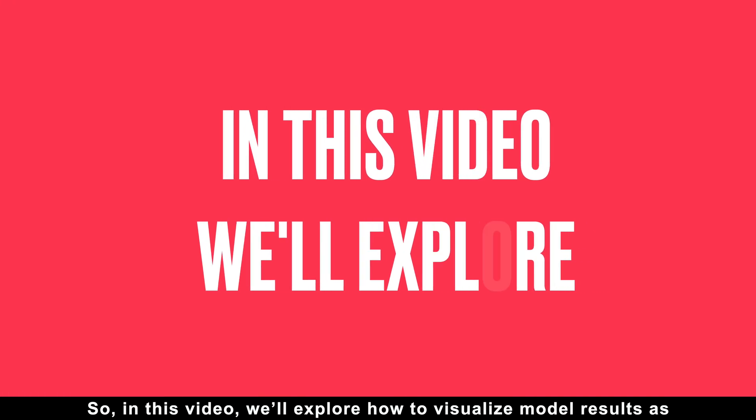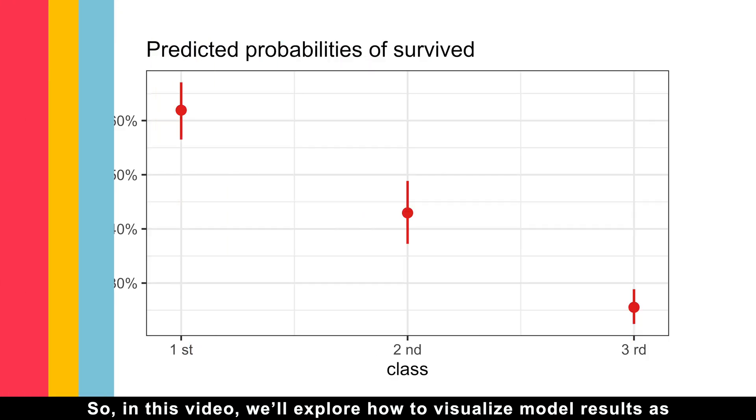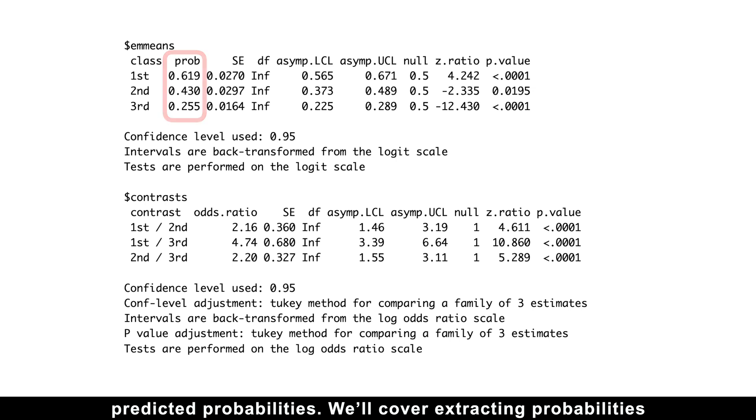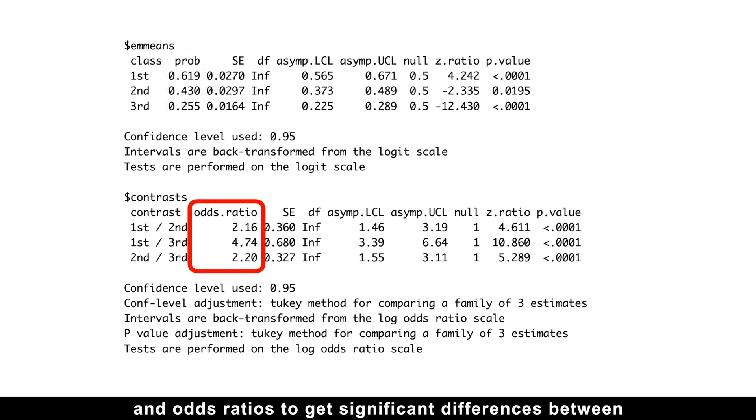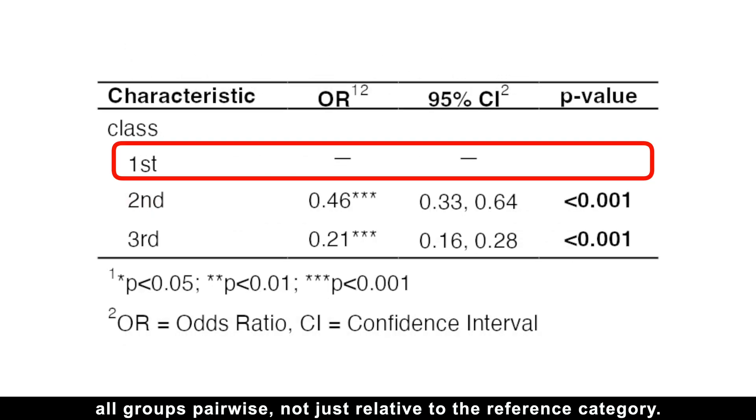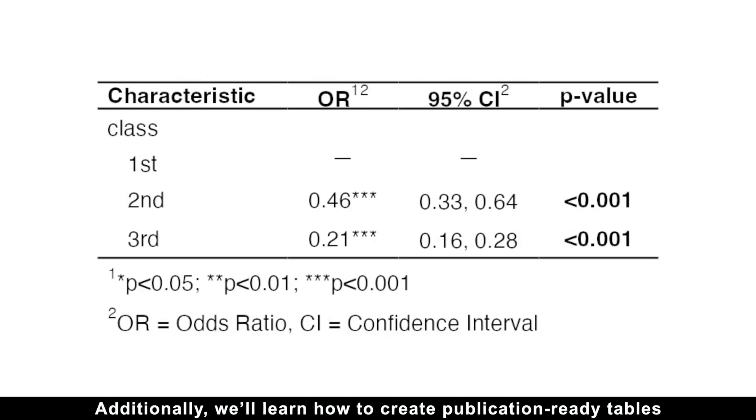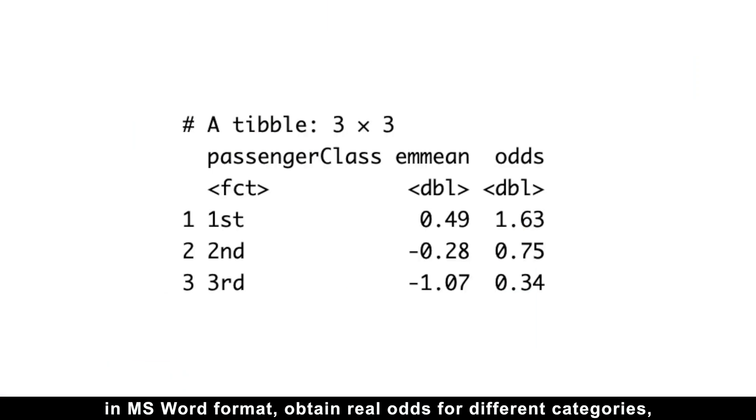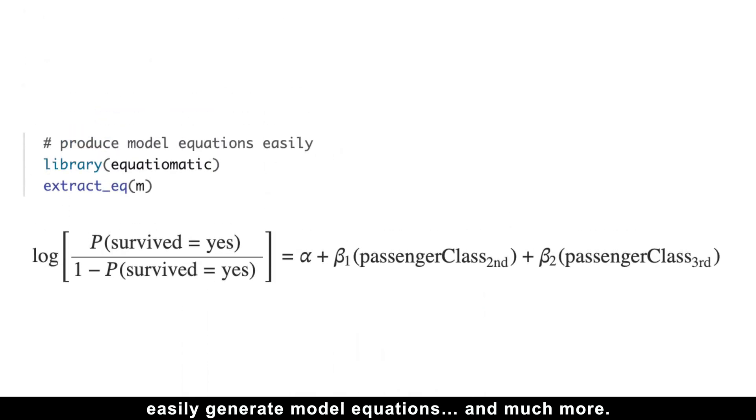So in this video we'll explore how to visualize model results as predicted probabilities. We'll cover extracting probabilities and odds ratios to get significant differences between all groups pairwise, not just relative to the reference category. Additionally, we'll learn how to create publication-ready tables in Microsoft Word format, obtain real odds for different categories, easily generate model equations, and much more.